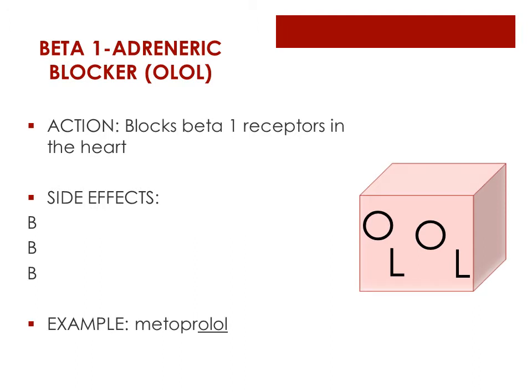There are beta-1 adrenergic receptors on the heart and beta-2 receptors in the airway. These receptors are turned on with adrenaline — the fight or flight response — blood pressure goes up, heart rate goes up, airway opens. Blocking these beta receptors can cause a lower heart rate and blood pressure. The side effects of beta blockers are three Bs: bronchospasm, blood sugar, and bradycardia. If we affect this system too much, we can take the pulse down too low and tighten the airway.